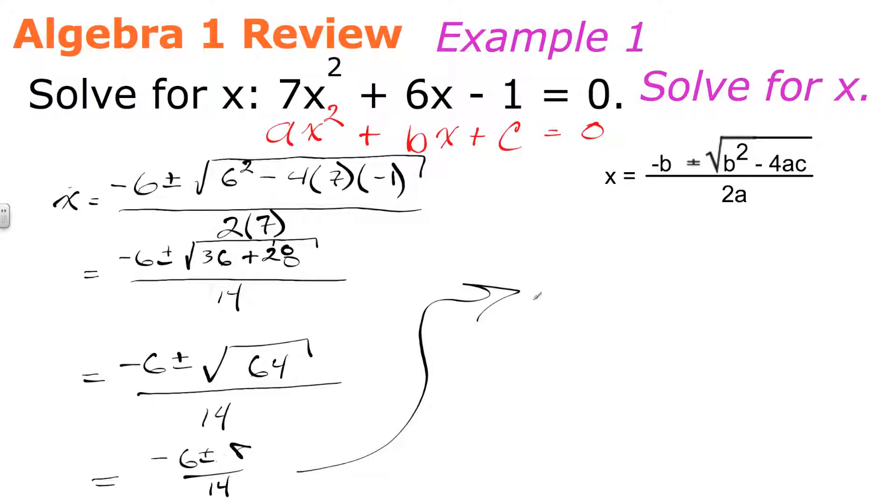Now, we can simplify this radical. So, this becomes -6 ± 8 over 14. I'm going to bring my work up here now. What I'm going to do from here to here is I'm going to split this into two problems. I'm going to write this as (-6 + 8) / 14 and the other answer would be (-6 - 8) / 14.